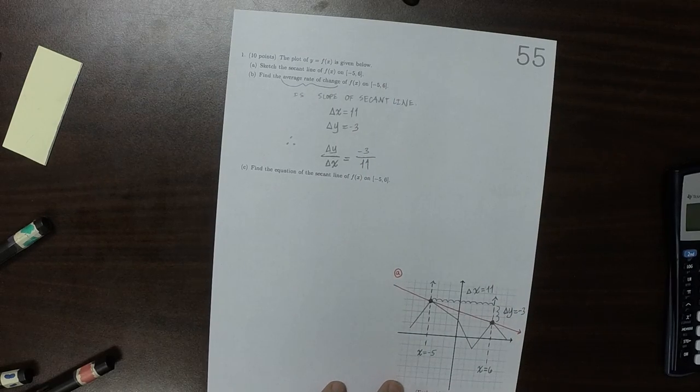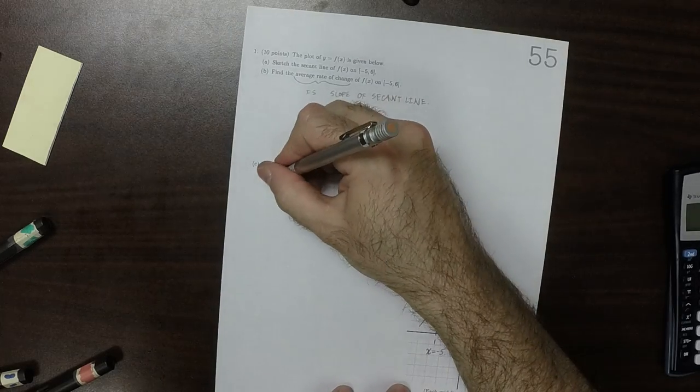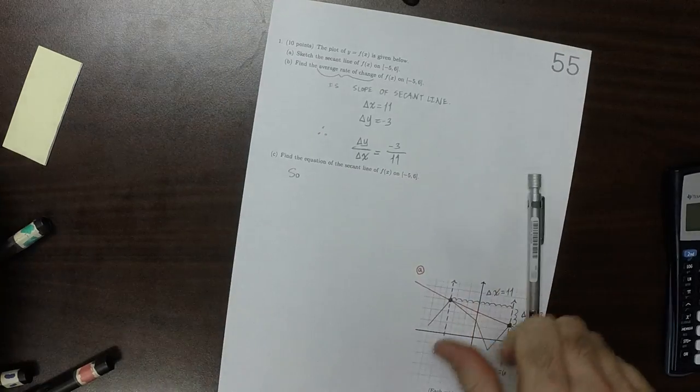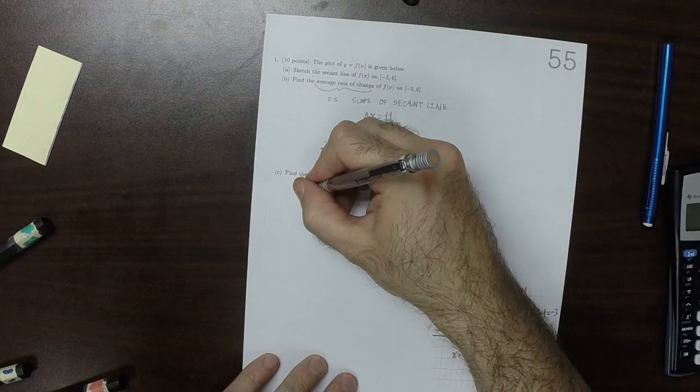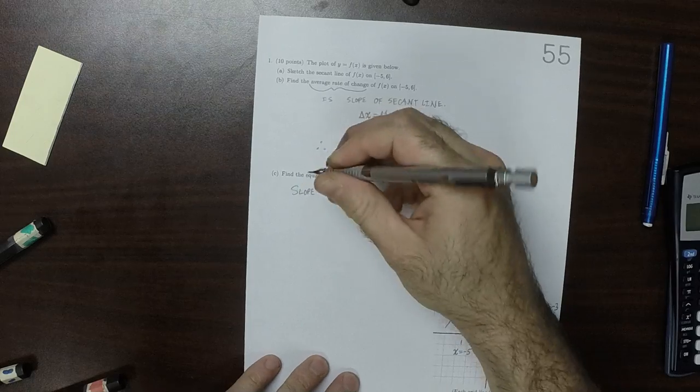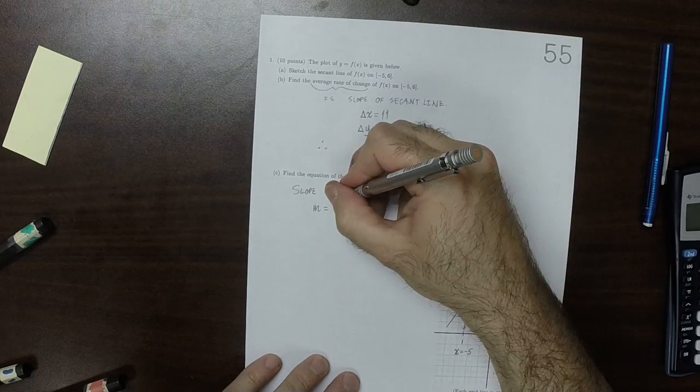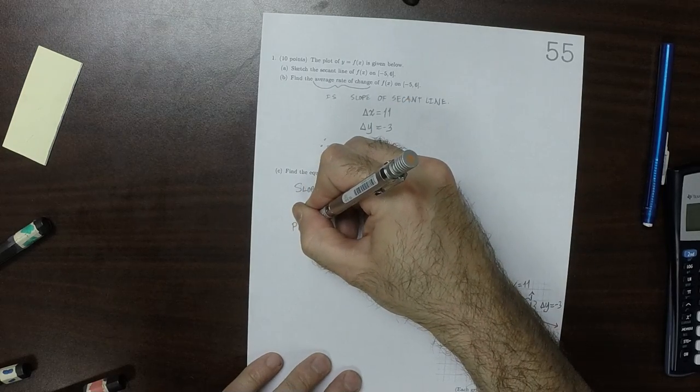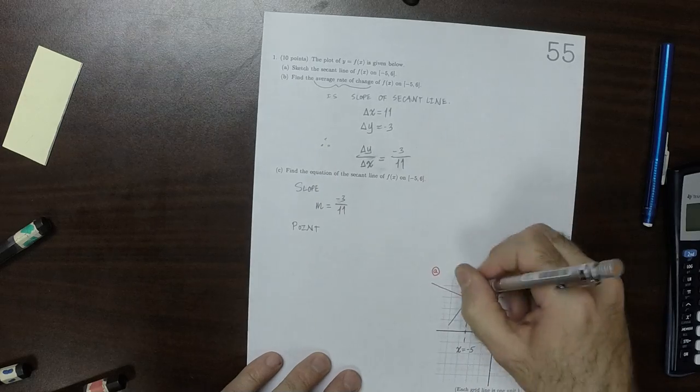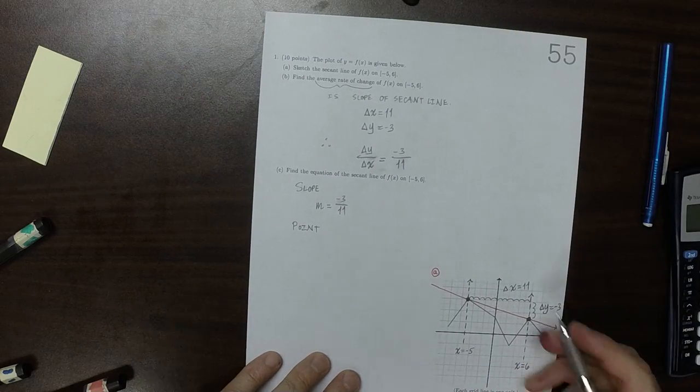Okay. Find the equation of the secant line. Okay. Well, the slope of the secant line is M equal to negative 3 over 11. And then a point on the secant line is either one of those two, but I'll use this one since it has positive values, so how about 6, 3.